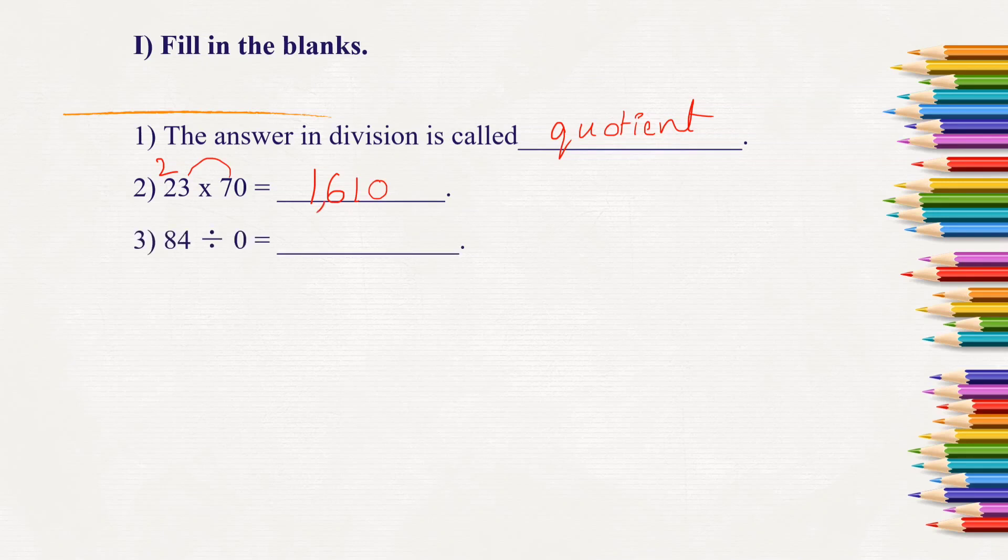So 1610. Next question, 84 divided by 0. Any number divided with 0 will be 0.